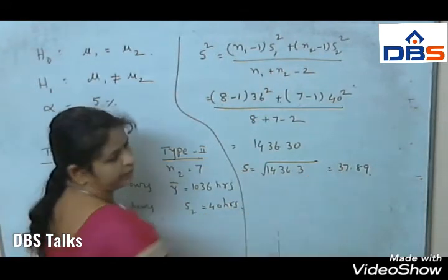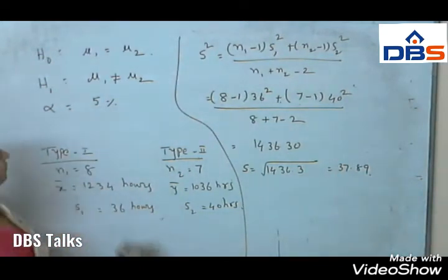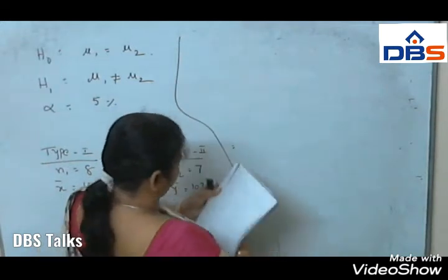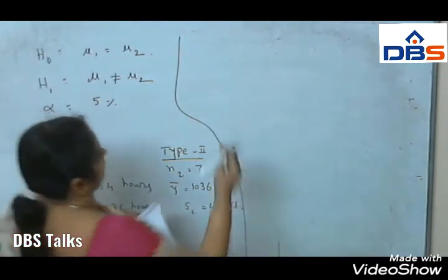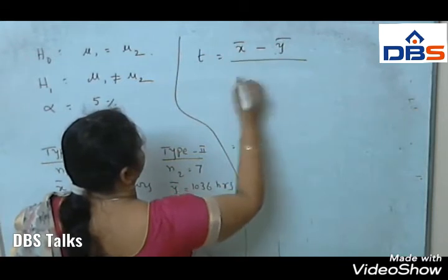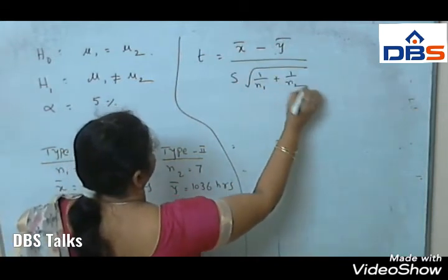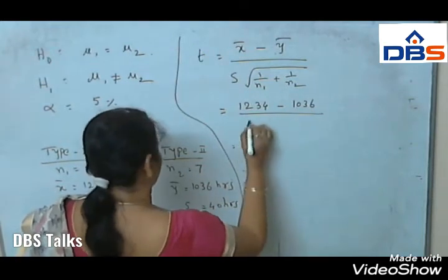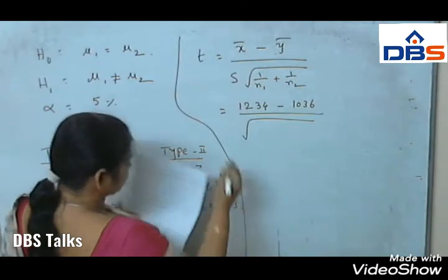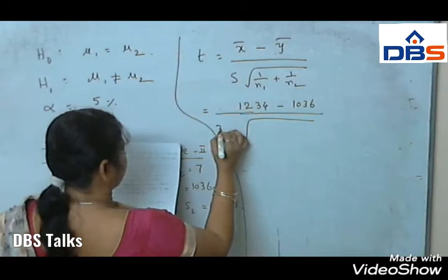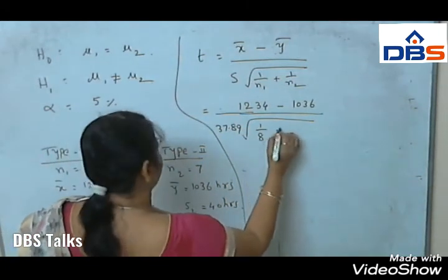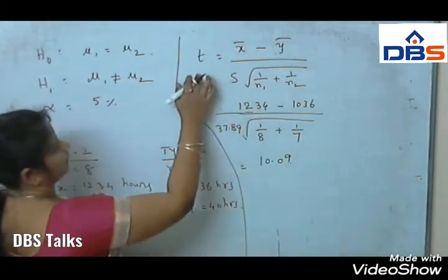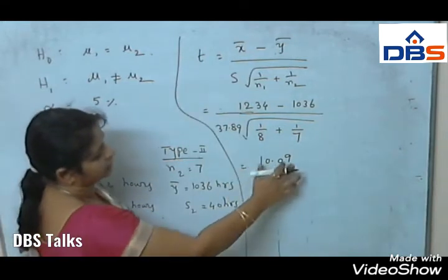So S equals 37.89. Now let us find the T value. T equals X-bar minus Y-bar by S into root of 1 by N1 plus 1 by N2. That is: 1234 minus 1036 over 37.89 times root of 1 by 8 plus 1 by 7. By calculating this value we get T equal to 10.09. So this is the calculated T value from the formula.